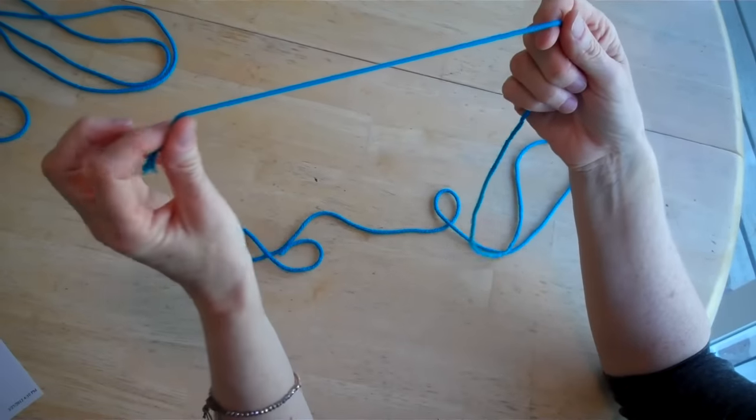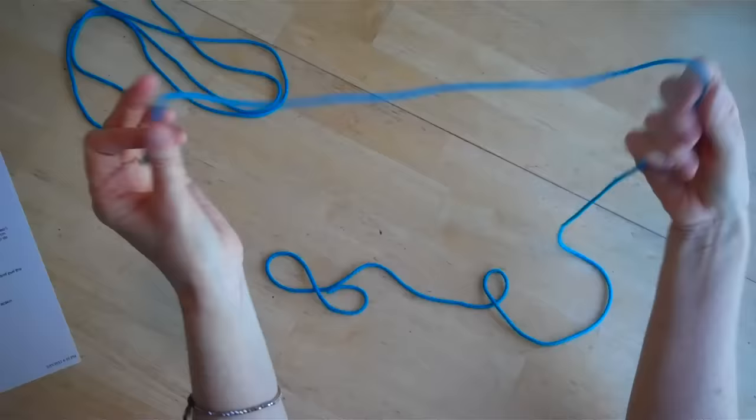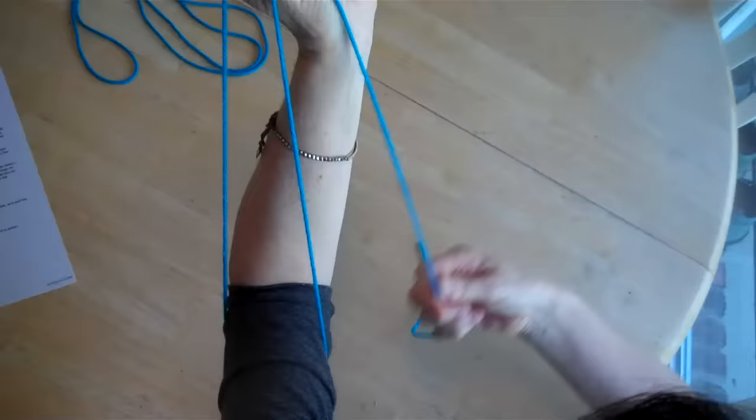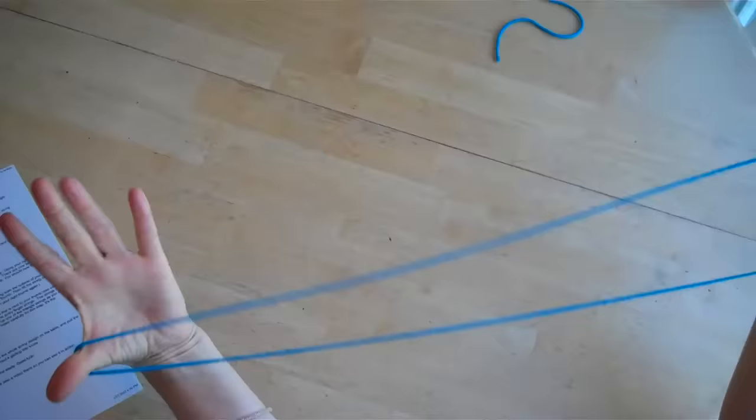We're going to learn how to do Jacob's Ladder. First thing you need to do is begin with a string that's the right length, and depending on how tall you are, it will matter how long your string is. A good guide is to take the string and wrap it around from your elbow to your hand about two and a half times. Then take that, tie it together in a loop, trim off the ends, and you should have a nice circle.